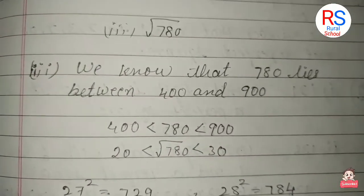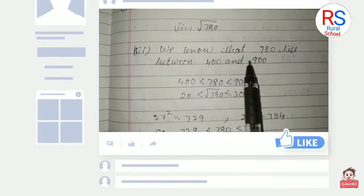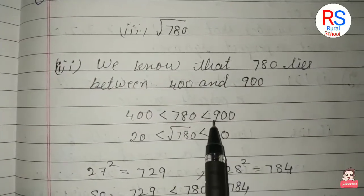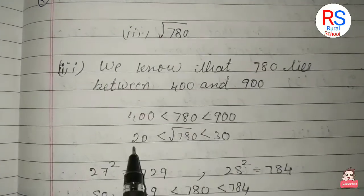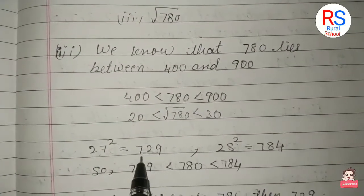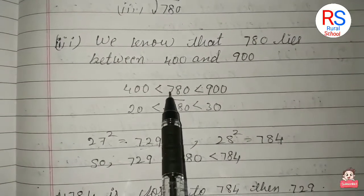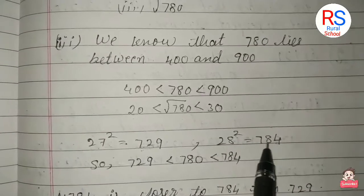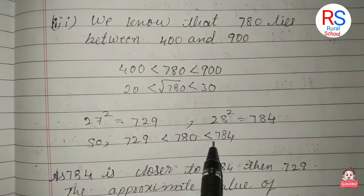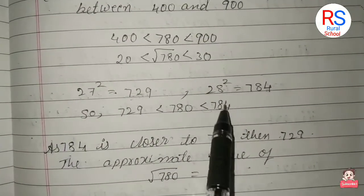Next, third one: √780. We know that 780 lies between 400 and 900. 20² = 400 and 30² = 900. For example, 27² = 729 and 28² = 784. This is nearest to 784, so the approximate value of √780 must be 28.